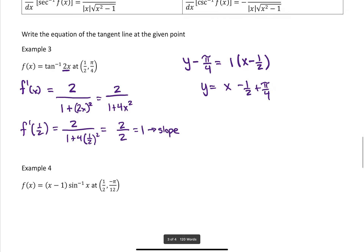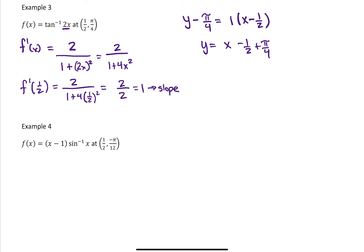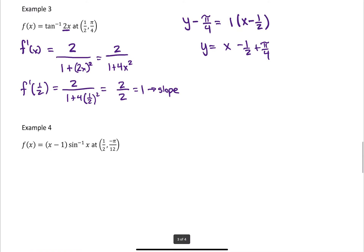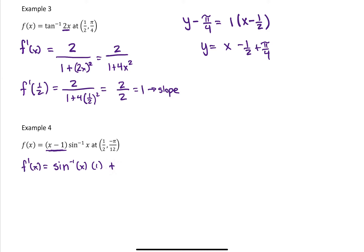For example four, we have sine inverse of x times (x minus 1), so for this derivative we need the product rule. F prime of x: the derivative of (x minus 1) is just 1, so we have sine inverse of x times 1, plus the derivative of sine inverse of x — which is 1 over the square root of 1 minus x squared — multiplied by (x minus 1).